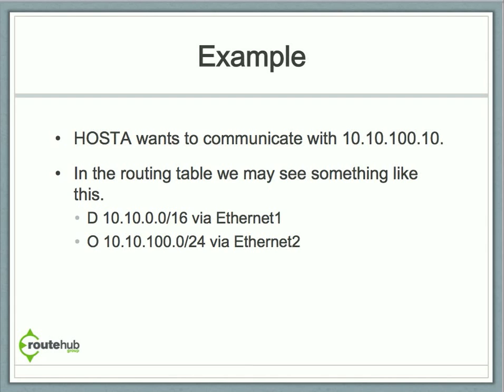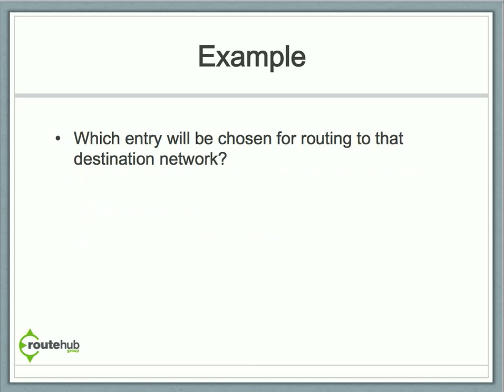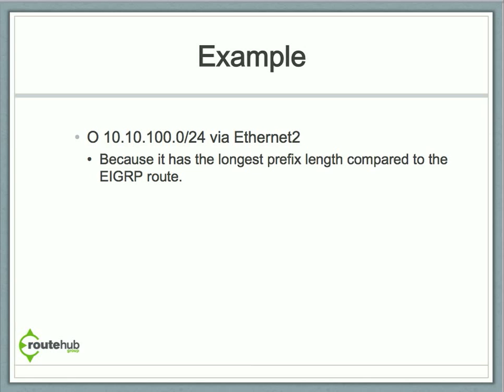It can also learn via OSPF the route 10.10.100.0/24 via Ethernet 2. The question is which entry will be chosen for routing to that destination network? The answer is it's going to use the OSPF route, 10.10.100.0/24, because it has the longest prefix length compared to the EIGRP route.